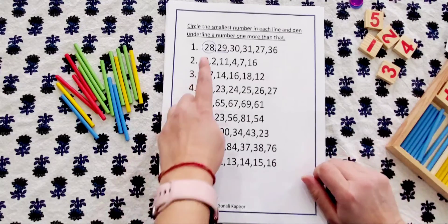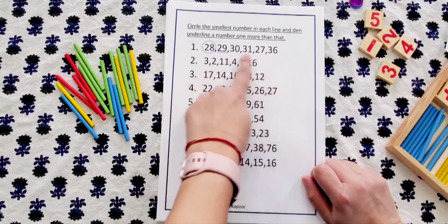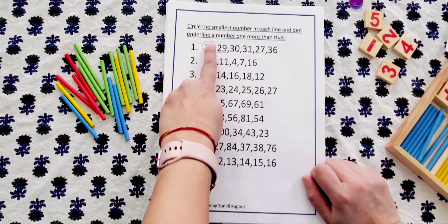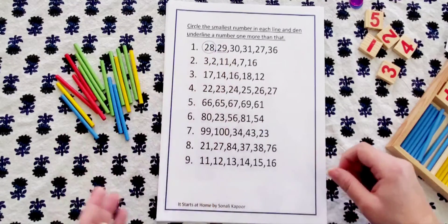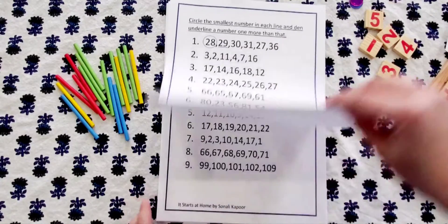Circle the smallest number in each line and then underline a number one more than that. Now circle the smallest number, you have to find the smallest number, circle it, and then underline a number one more than that. So the same thing needs to be done here for all the numbers.